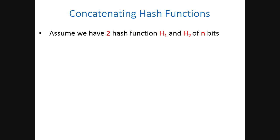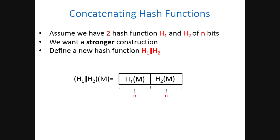Assume we have two hash functions of n bits, and we want to obtain more security than just provided by each one. A natural way to achieve this is to concatenate these two hash functions — the concatenation combiner simply concatenates the outputs of h1 and h2, giving a new hash function of size 2n bits. This is a well-known construction used in practice at least until a few years ago.